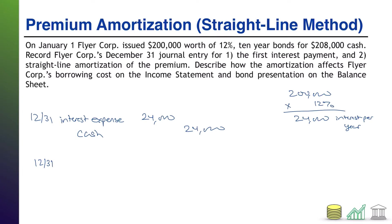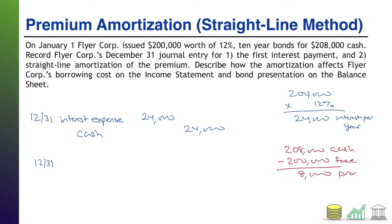We also have to deal with amortizing the premium, specifically straight line. Notice that we received $208,000 in cash for this bond, but the bond has a face value of only $200,000, so that means we received an $8,000 premium on the bond. It is a 10-year bond, so we divide by 10, and that means we are going to amortize this premium at $800 per year, so that over the whole 10-year span we amortize the full $8,000.